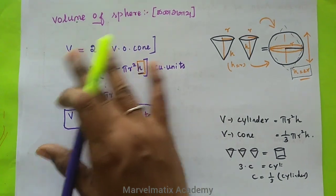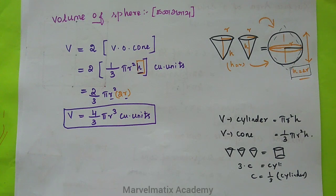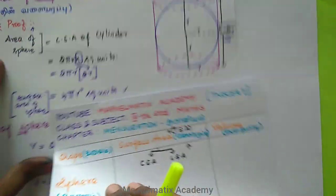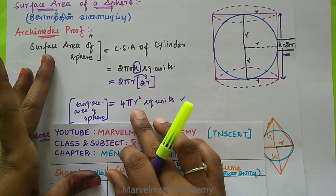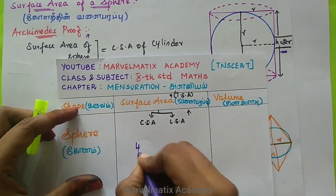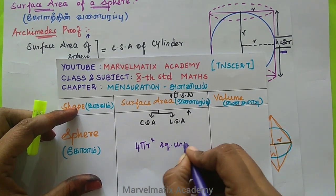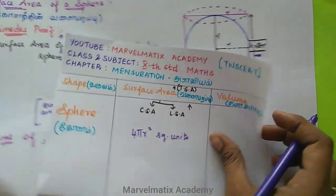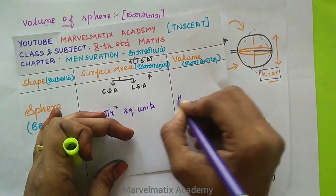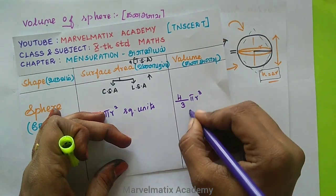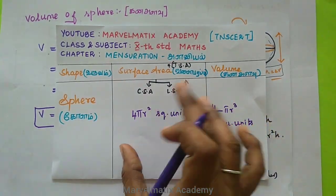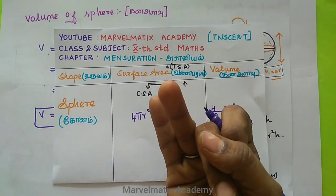Now we use CSA. Sphere CSA is 4πR square units — that is the same. Sphere surface area is 4πR square units. Next, we use volume. Volume is 4 by 3 π R cube — cubic units. When you use the formula, it will be very simple. If you do a whole — a whole square and hollow square are easy. We have two formulas easy to read.